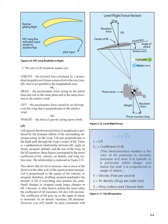Thrust is the forward force produced by a power plant/propeller as it forces a mass of air to the rear, usually said to act parallel to the longitudinal axis. Drag is the aerodynamic force acting on the airfoil, lines, and cart in the same plane and direction as the relative wind. Lift is the aerodynamic force caused by air flowing over the wing that is perpendicular to the relative wind. Weight is the force of gravity acting upon a body. Lift opposes the downward force of weight and is produced by the dynamic effects of the surrounding airstream acting on the wing. Lift acts perpendicular to the flight path through the wing center of lift. There is a mathematical relationship between lift, angle of attack, airspeed, altitude, and the size of the wing — corresponding to the terms coefficient of lift, velocity, air density, and wing surface area.